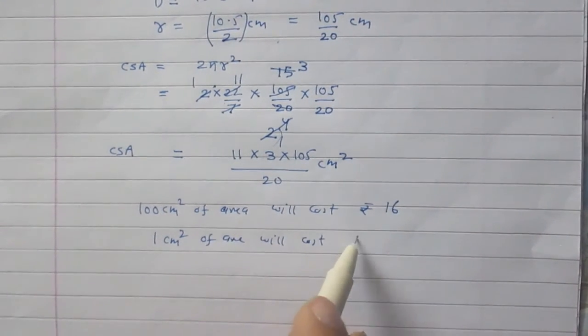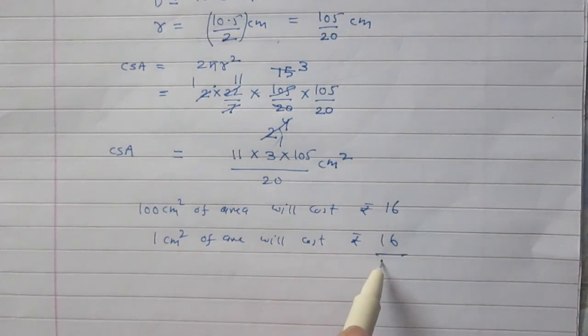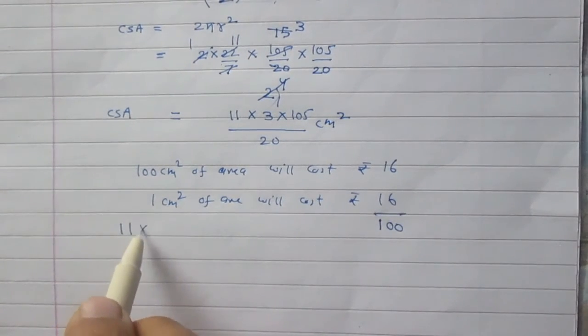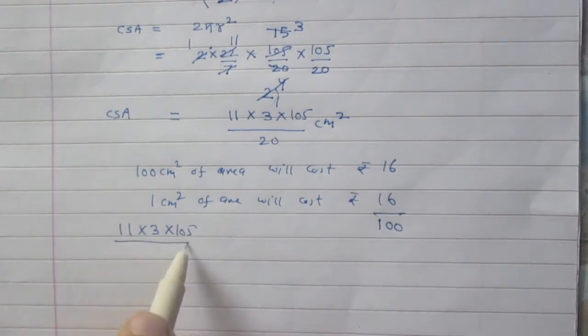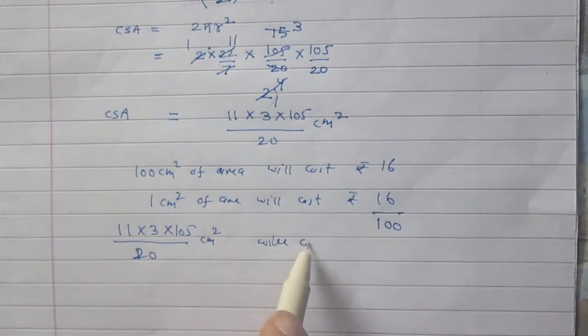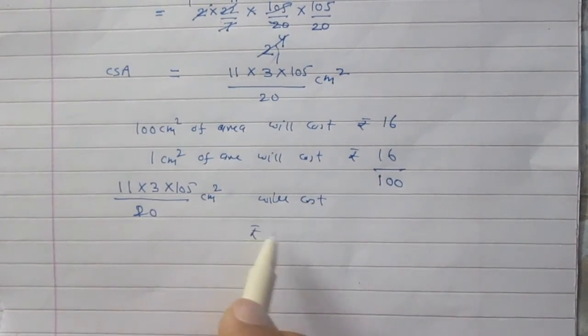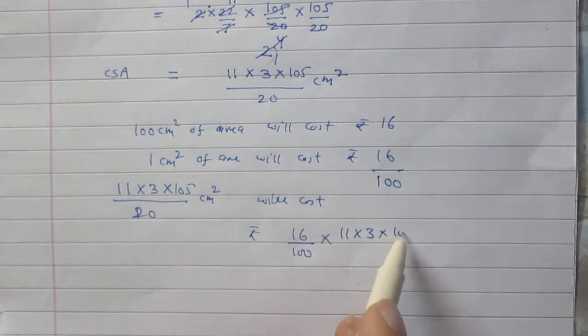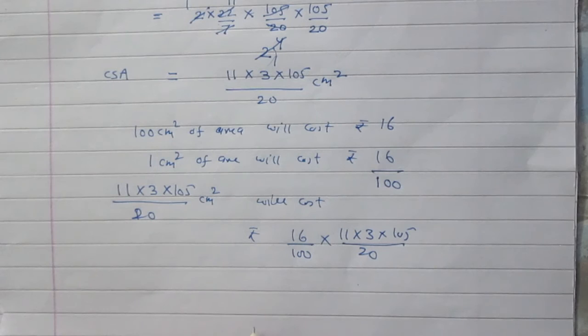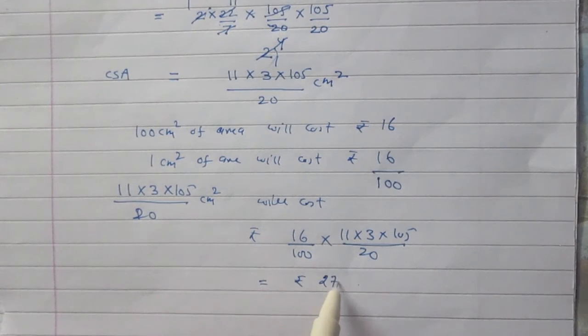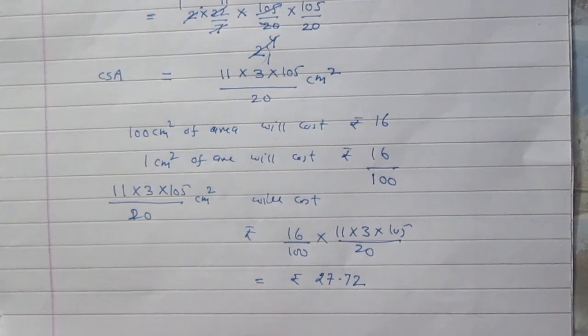So the area 11 × 3 × 105/20 centimeter square will cost rupees 16/100 × 11 × 3 × 105/20. After calculation, you will get rupees 27.72. This is the final answer.